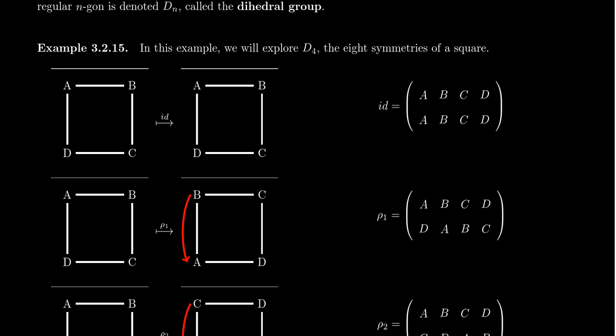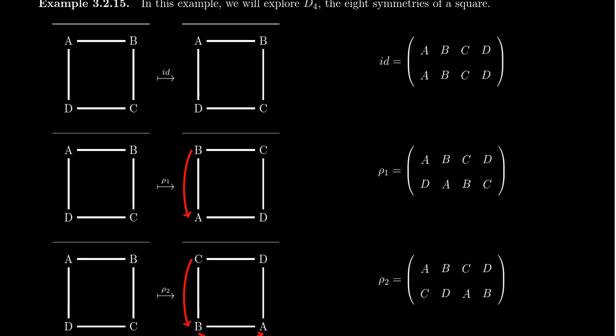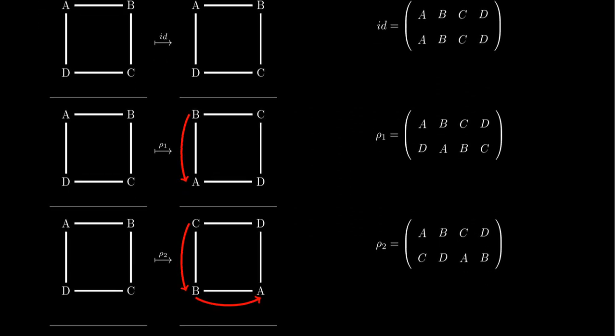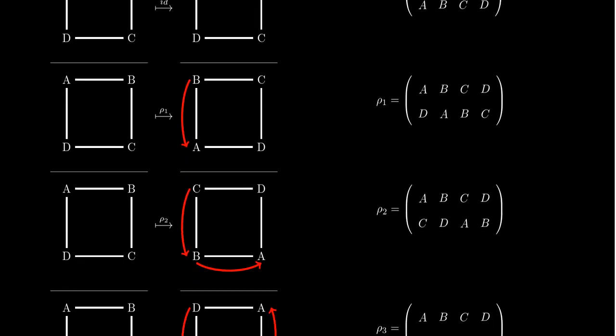The identity symmetry doesn't move anything, so A goes to A, B goes to B, C goes to C, and D goes to D. That is the first of these eight symmetries. In order to be a group, we have to have inverses, and we also have to make sure we have a binary operation — that the product of two symmetries is in fact a symmetry — which we'll be more specific about in a moment.